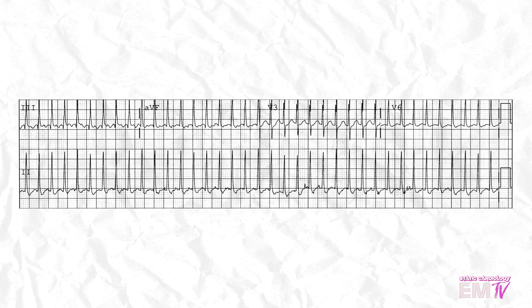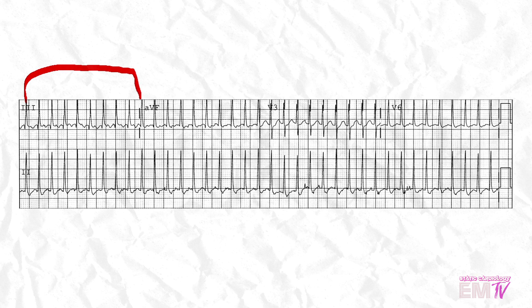Remember, with a 12-lead ECG, you're actually looking at a 10-second strip. So unless you're really good at math, we need to make this into a 6-second strip to count rate. The way I like to do this is to take two lead groupings, which are 2.5 seconds each, and then add five big boxes to make my 6-second strip.